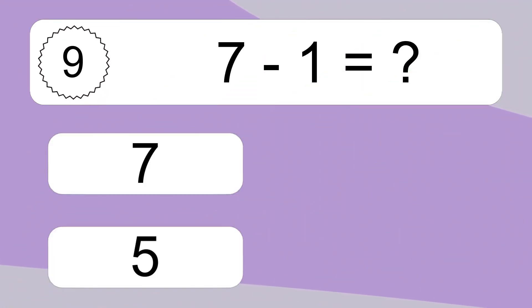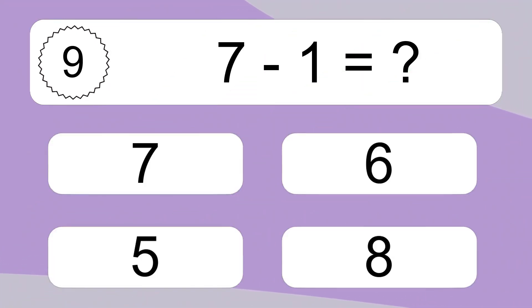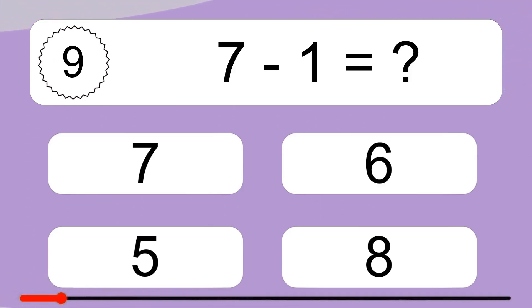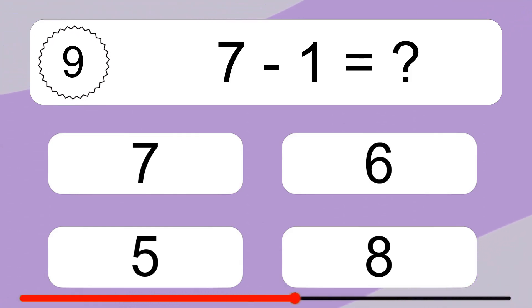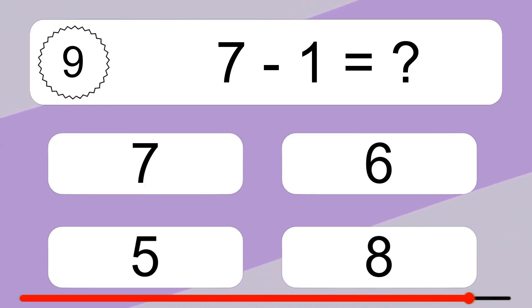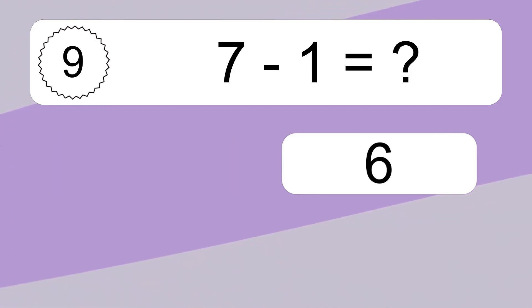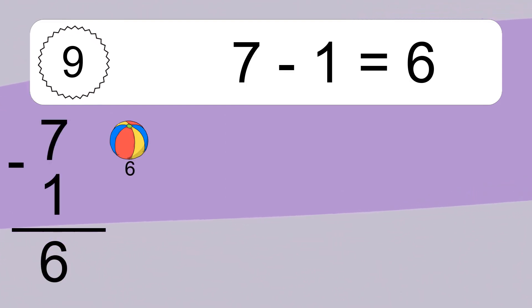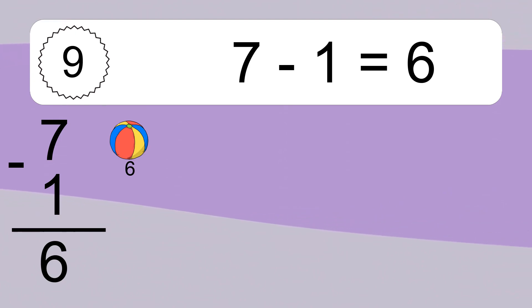7 minus 1 equals what? 7 minus 1 equals 6. Let's count it: 6.